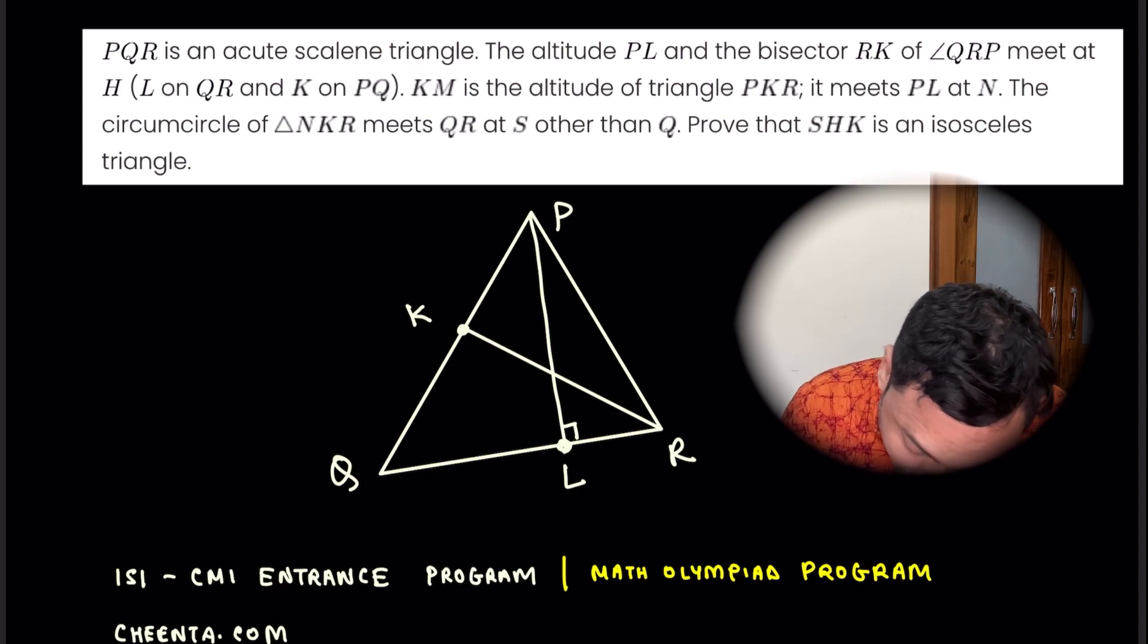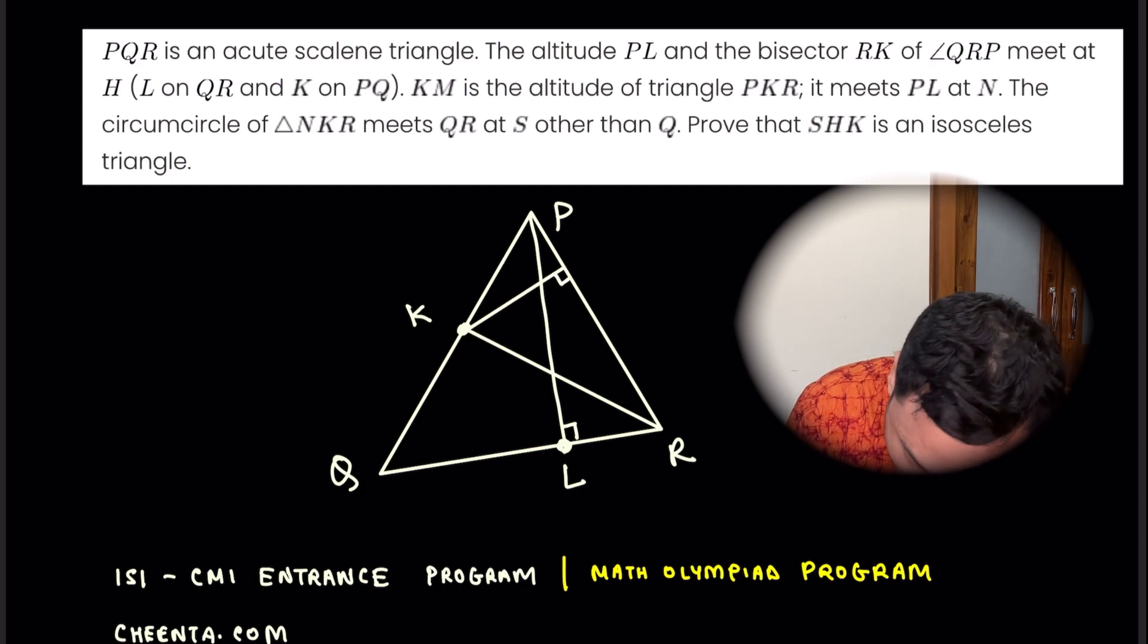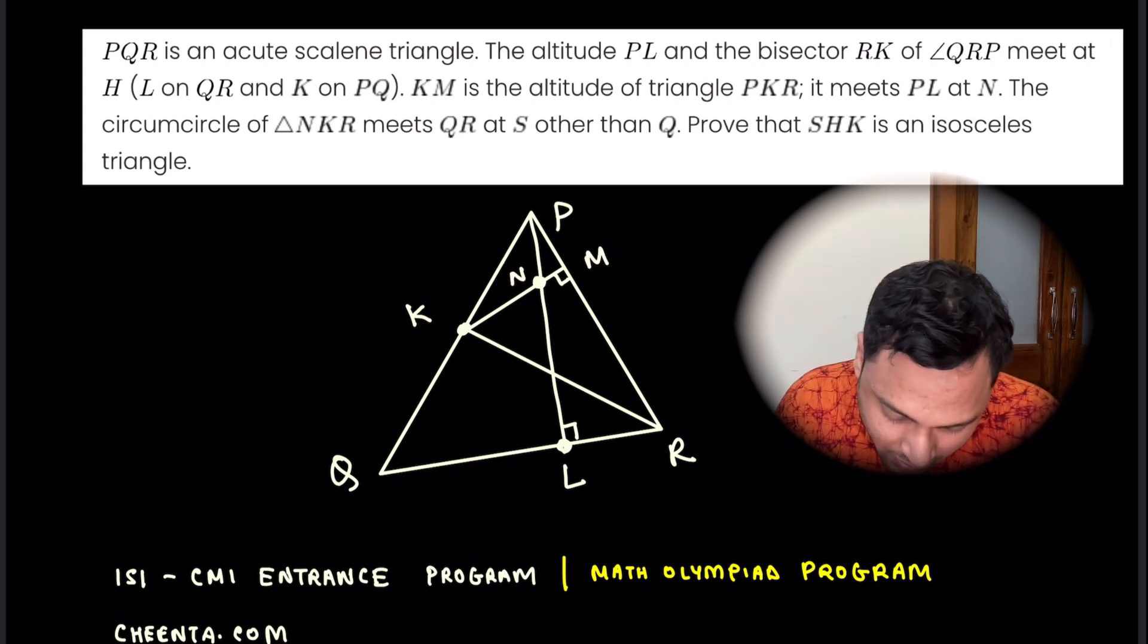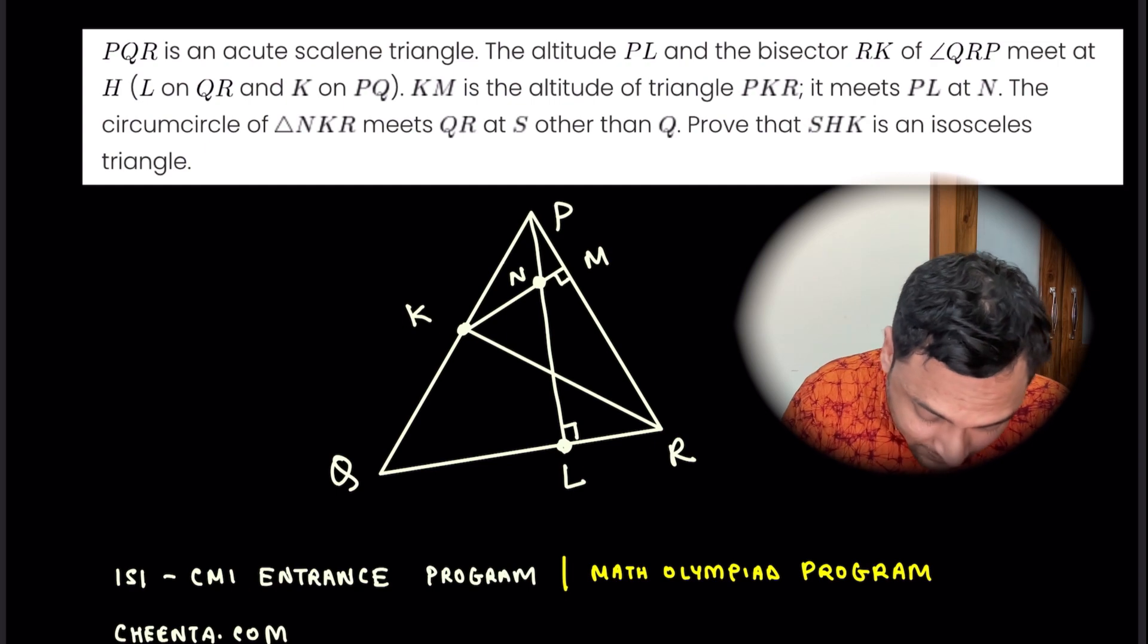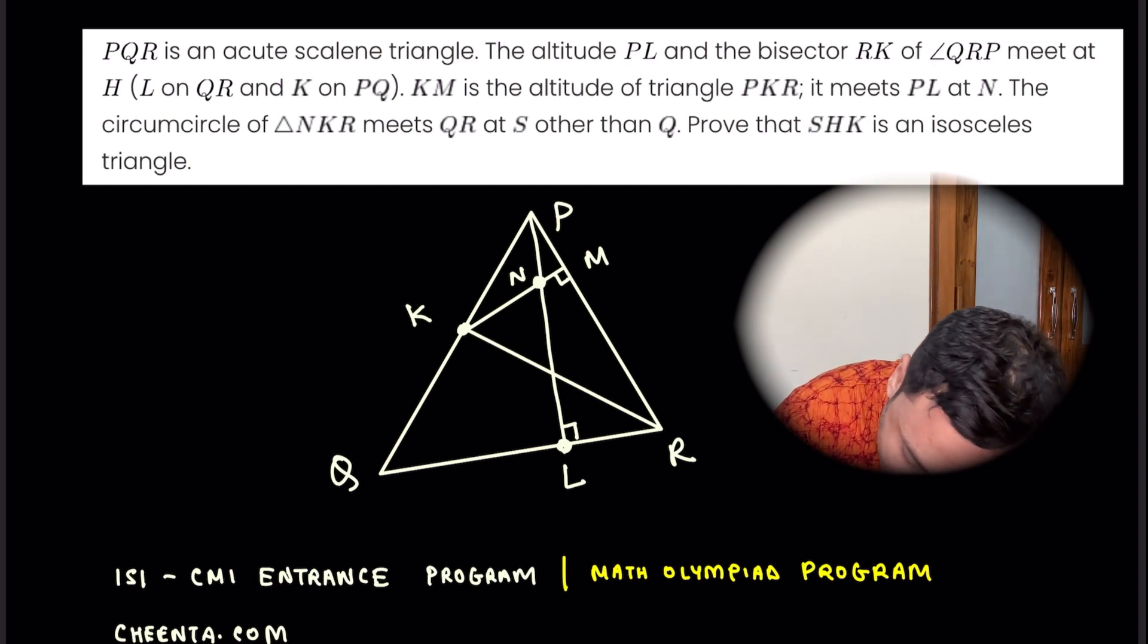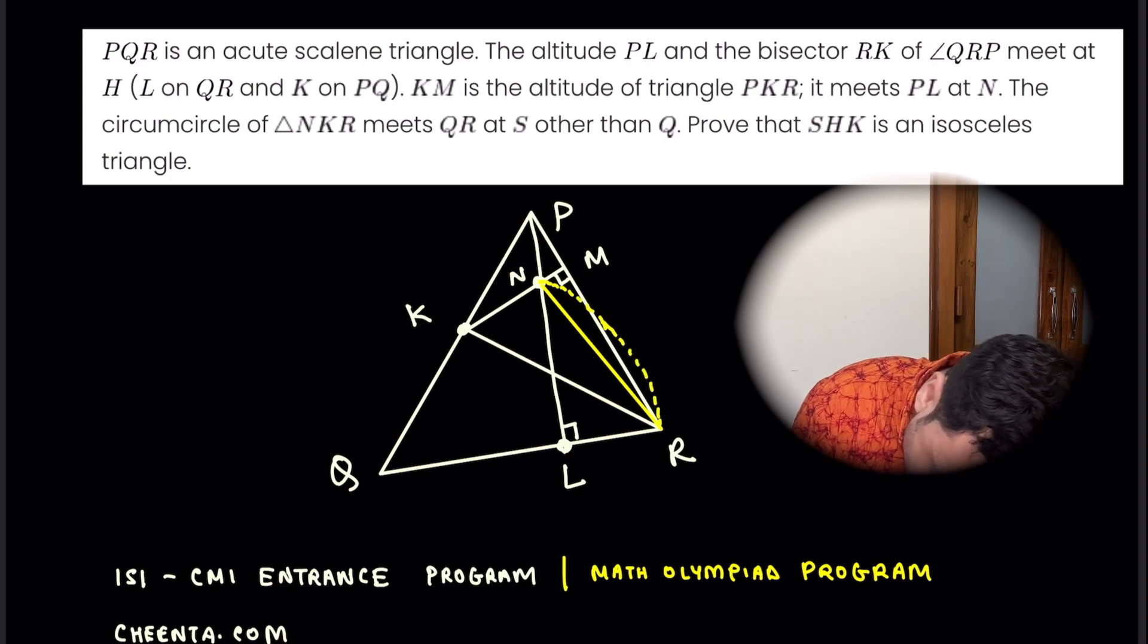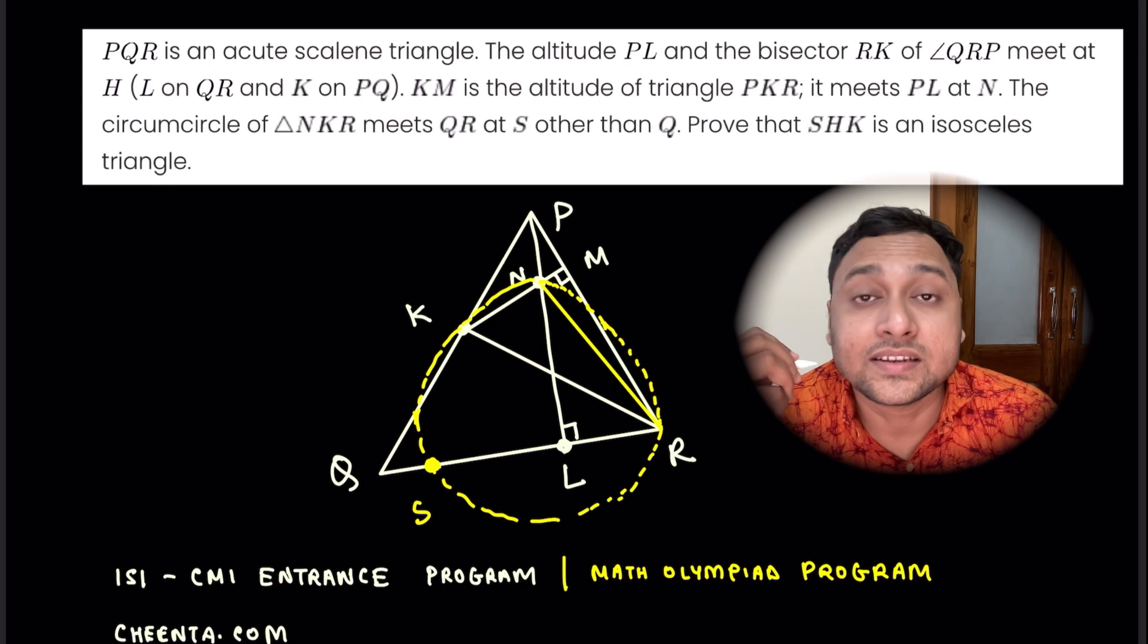And from the point K, we draw the perpendicular one more time. This angle is 90 degrees. So this point here is M and this point is N. Now what you do is, you draw the circumcircle of NKR. And this point is S.